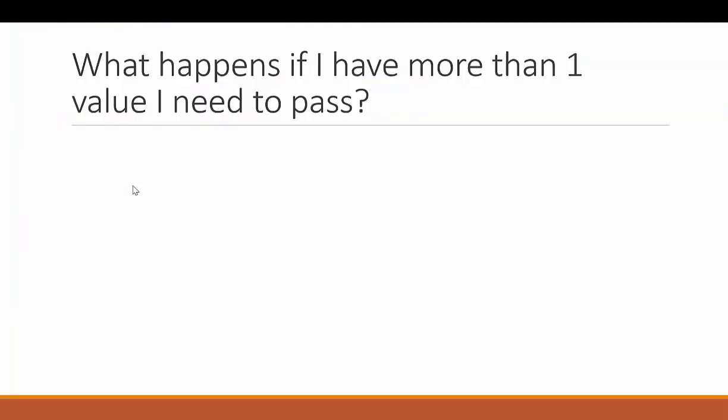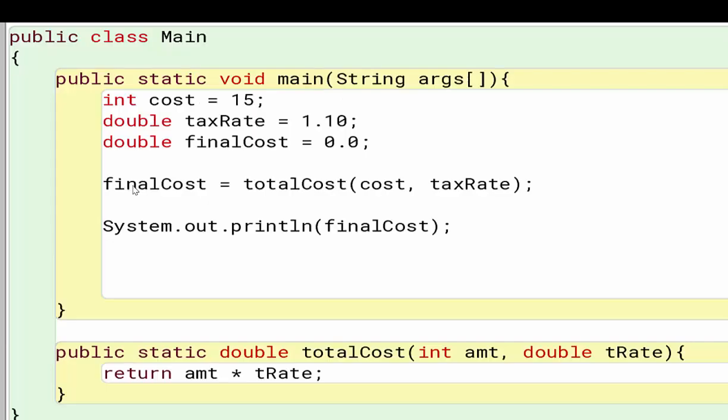Now what happens if I have more than one value I need to pass? Maybe you have an assignment where you have to pass more than one value. Not a problem. So here we've updated our code and what I've done is I went ahead and changed the double cost to an int so you can see a different data type. I have my double taxRate, 1.1, finalCost. I don't know what that's going to be so I have that set to 0.0.